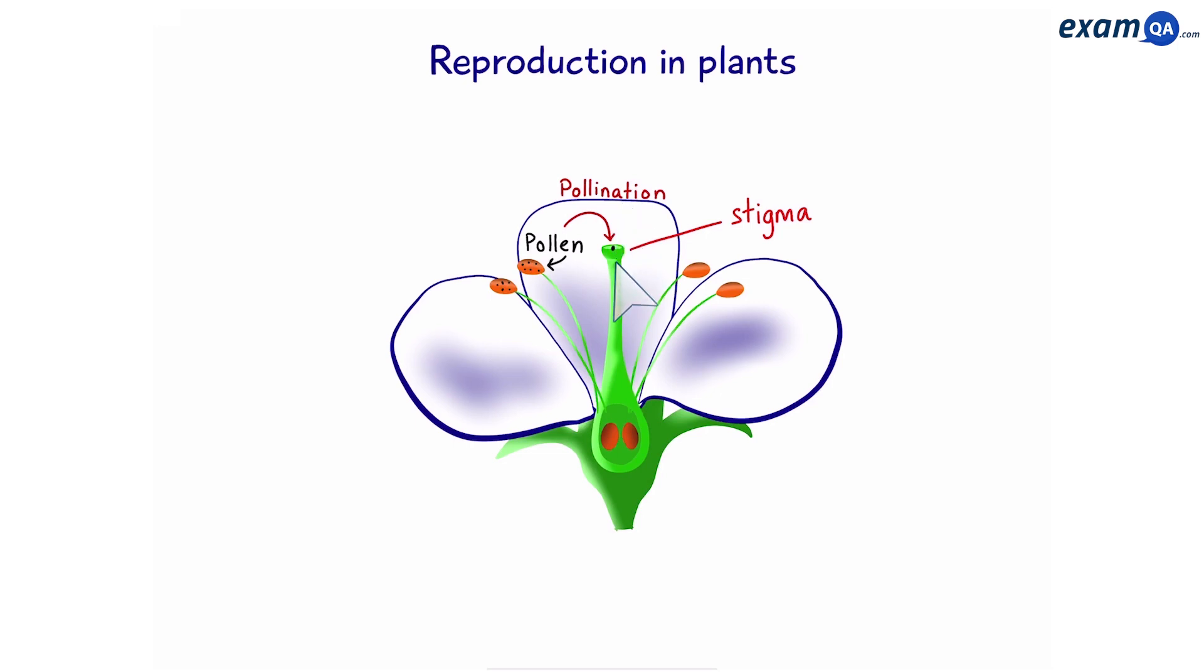Once the pollen lands on the stigma, a pollen tube is created, which goes from the stigma down the style and into the ovary. The pollen makes its way down there. Here the male sex cell and the female sex cell will combine. So the combination of the nucleus of the male sex cell with the nucleus of the female sex cell is called fertilization.